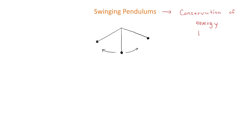Remember, the conservation of energy equation says that an object's initial kinetic energy plus the object's initial potential energy is equal to the object's final kinetic energy plus the object's final potential energy.